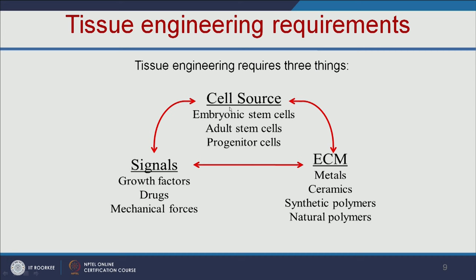The cell source can be embryonic stem cells or adult stem cells. The extracellular matrix — that is the scaffold — can be metal, ceramics, synthetic polymers, or natural polymers. Depending on the tissue or organ you want to grow, you select your scaffold: metal for bone replacement, or synthetic and natural polymers for other applications. Depending on the application, you select the ECM.